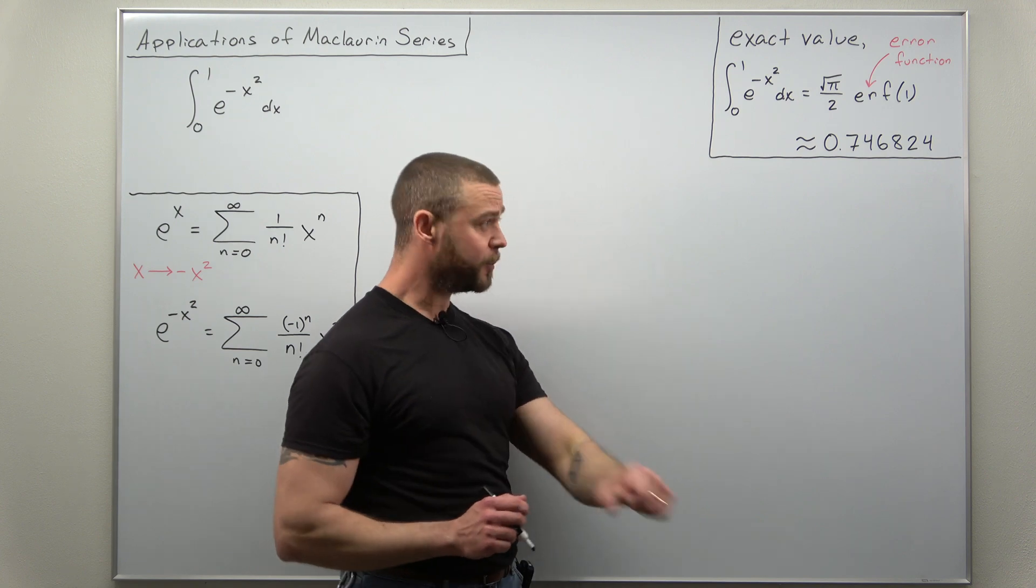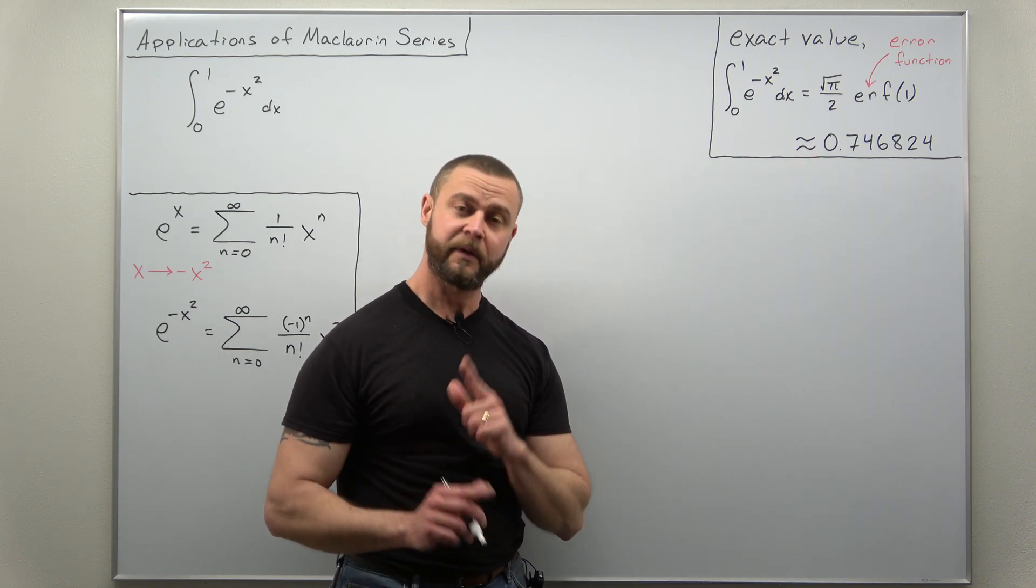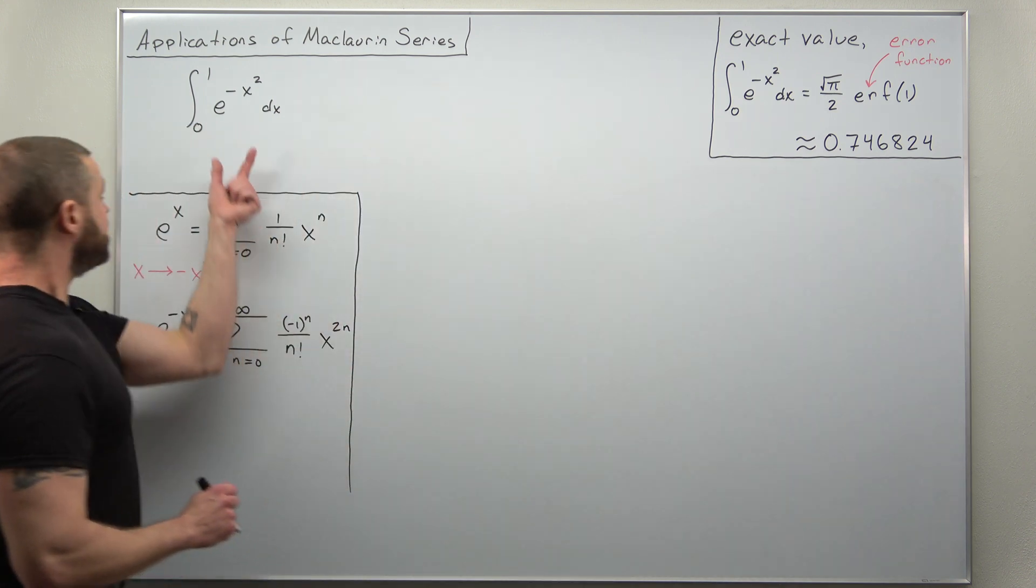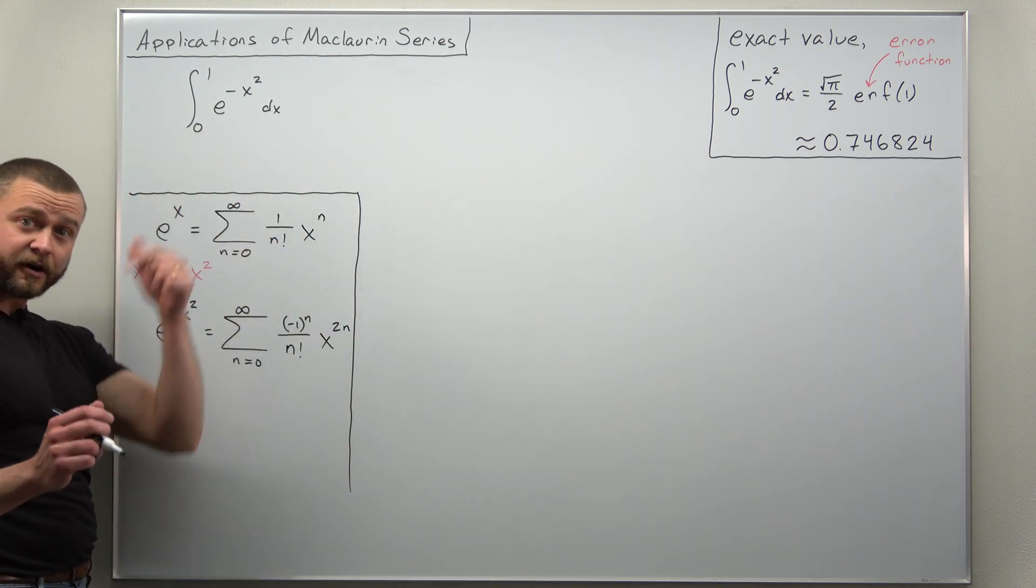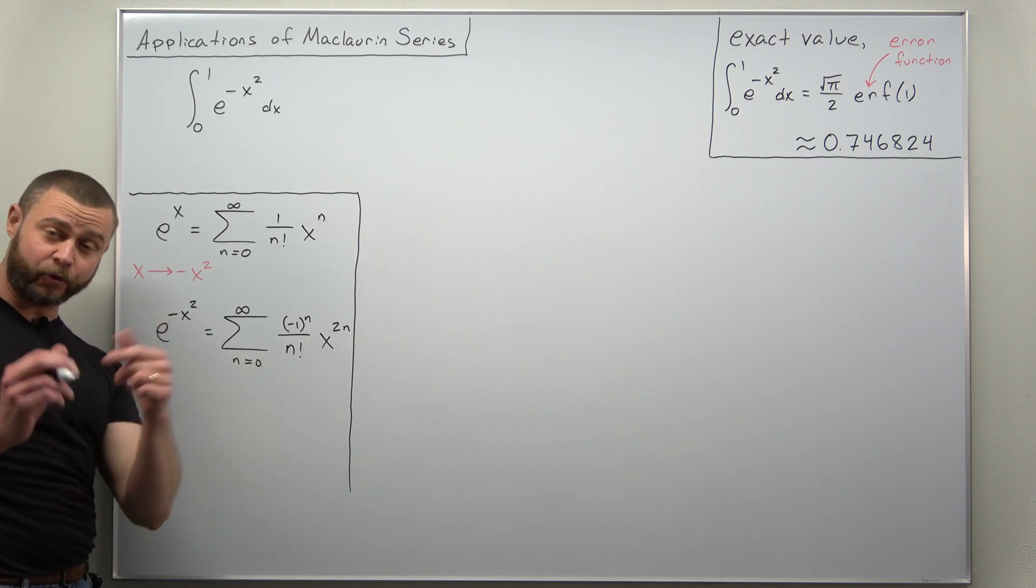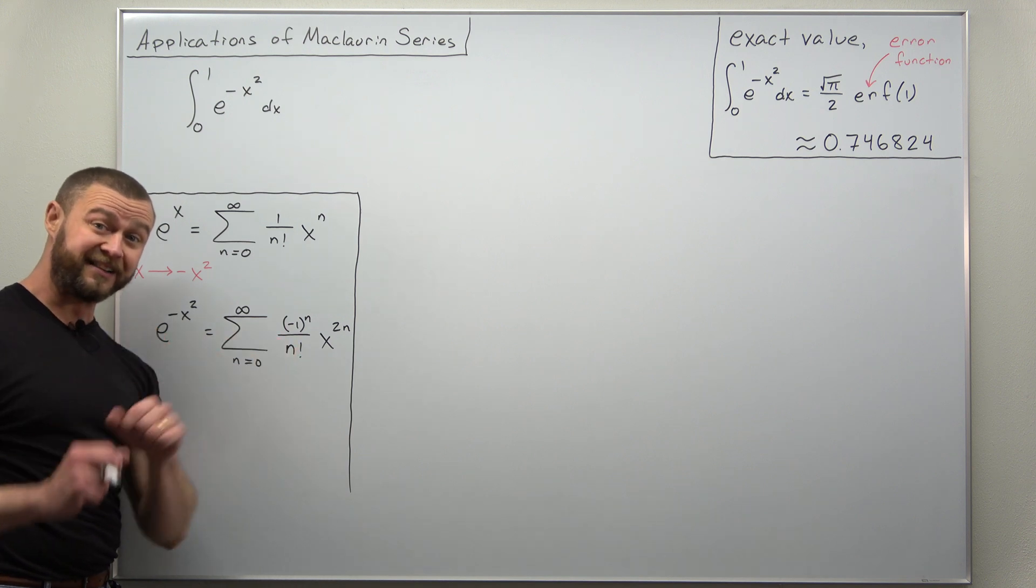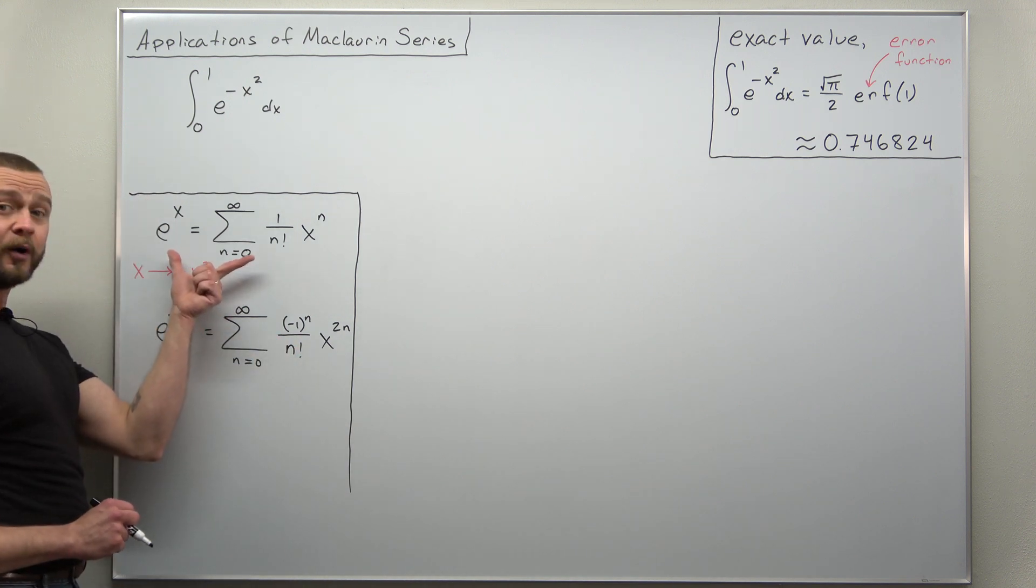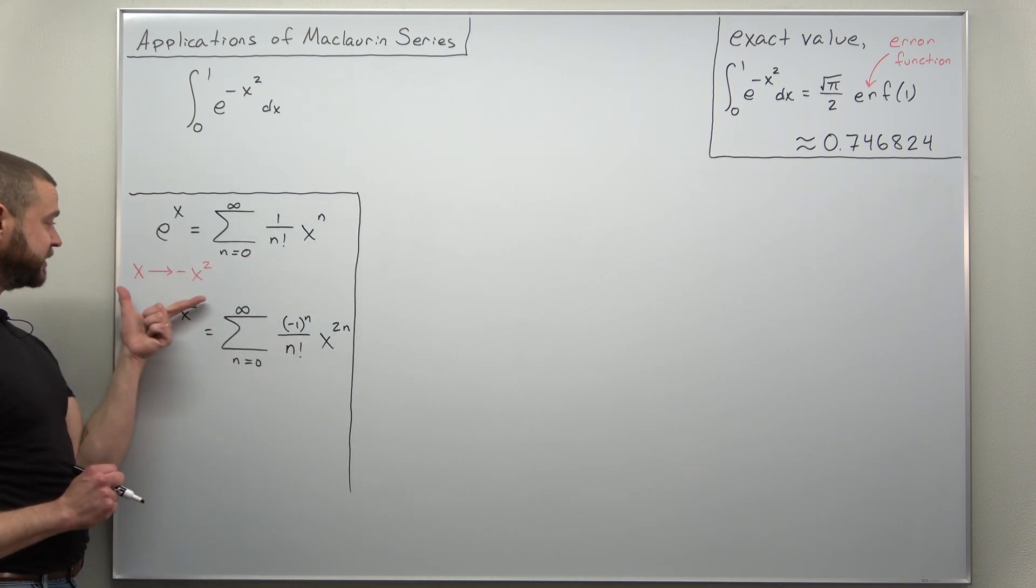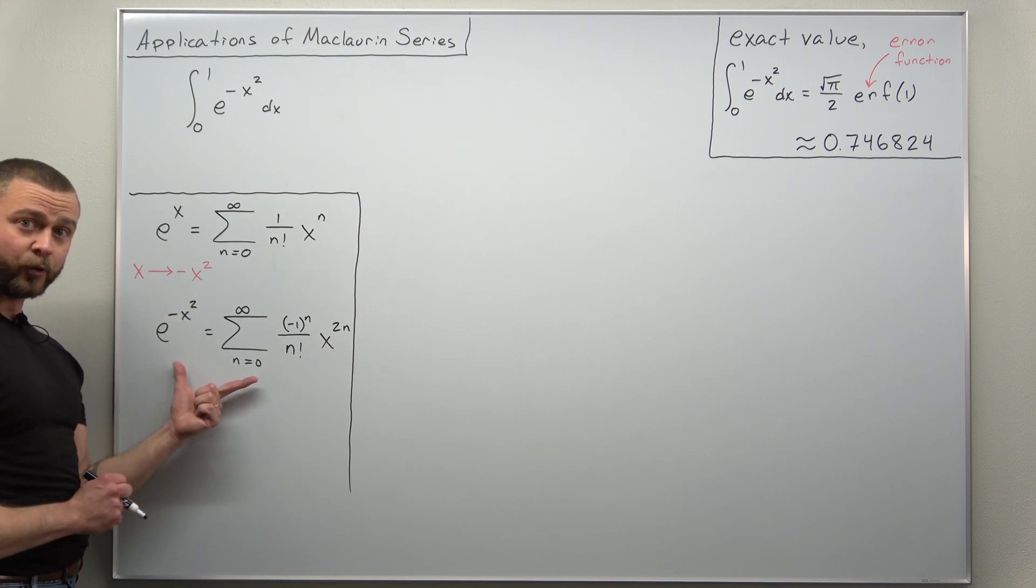Now what we're going to find is by using a Maclaurin series we'll get an answer that's reasonably close to that. How we do that is we take our function e to the negative x squared and we first find a Maclaurin series for it. We did that in a previous video, I have that link down below. We start with the Maclaurin series for e to the x, make an algebraic replacement, and we get our Maclaurin series.